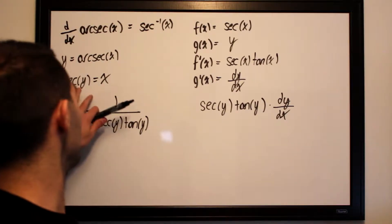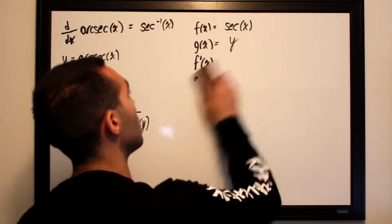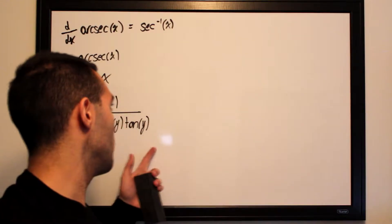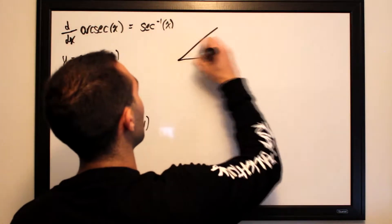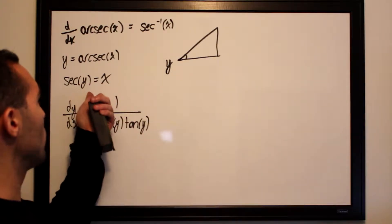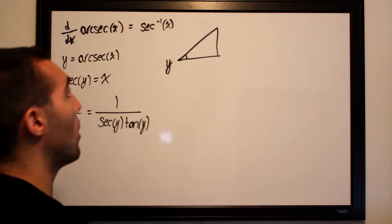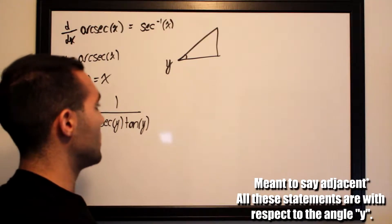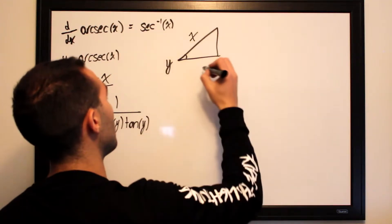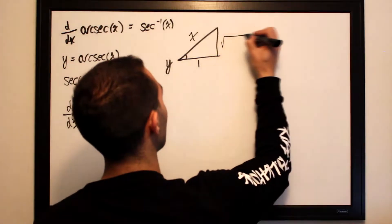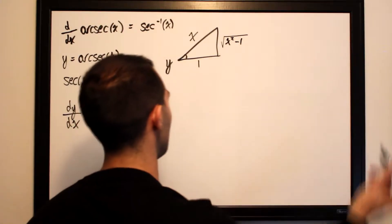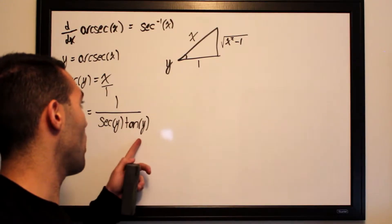Now we construct a right triangle to express things in terms of x, as done in previous videos on sine, cosine, and tangent. We place angle y in one corner. Since secant of y equals x, and secant is hypotenuse over adjacent — the inverse of cosine — secant equals x over one. So the hypotenuse is x and the adjacent side is one. The remaining side is therefore the square root of x squared minus one.